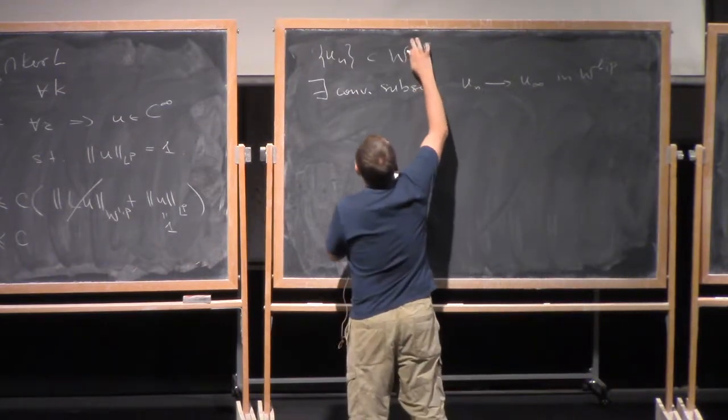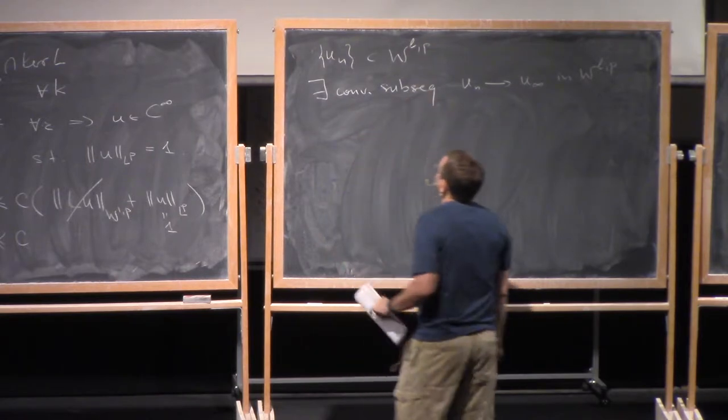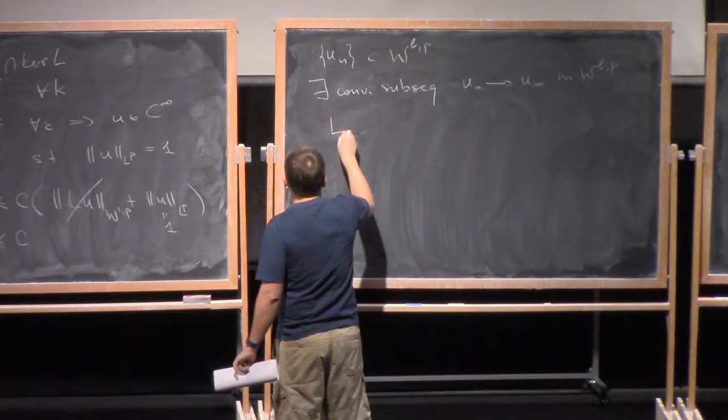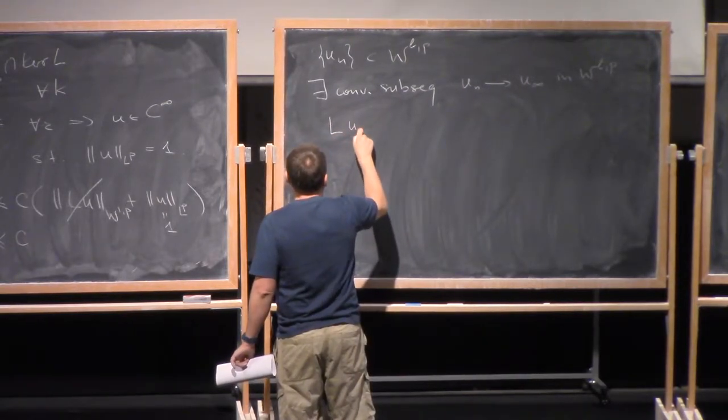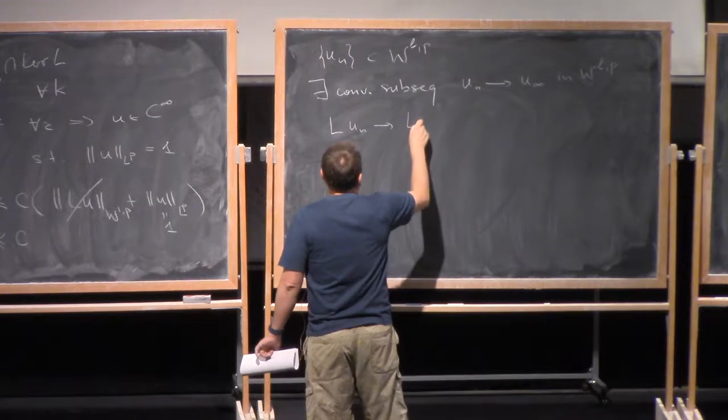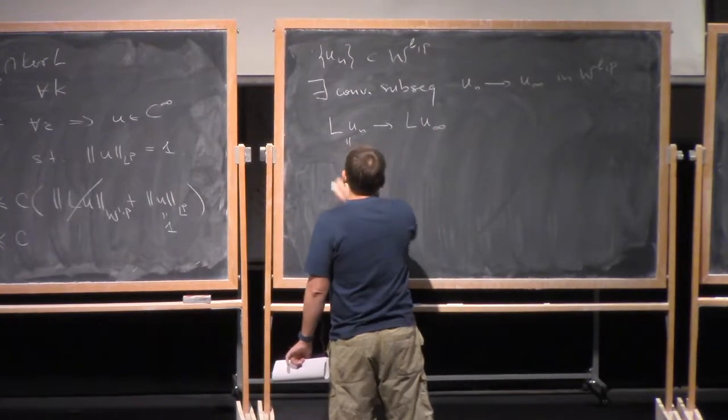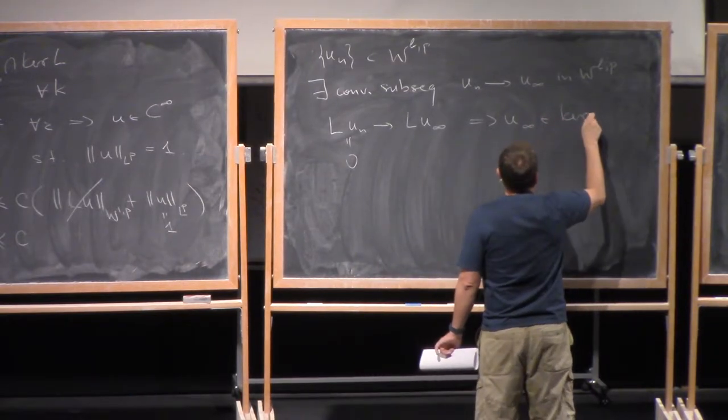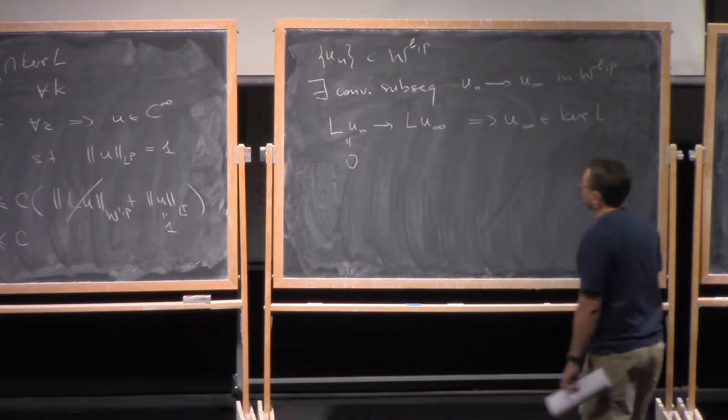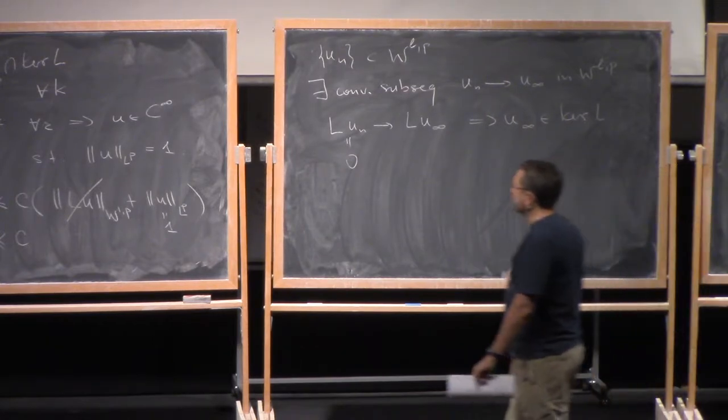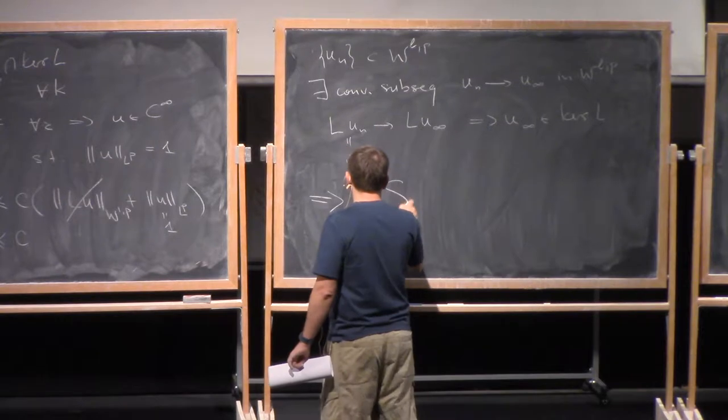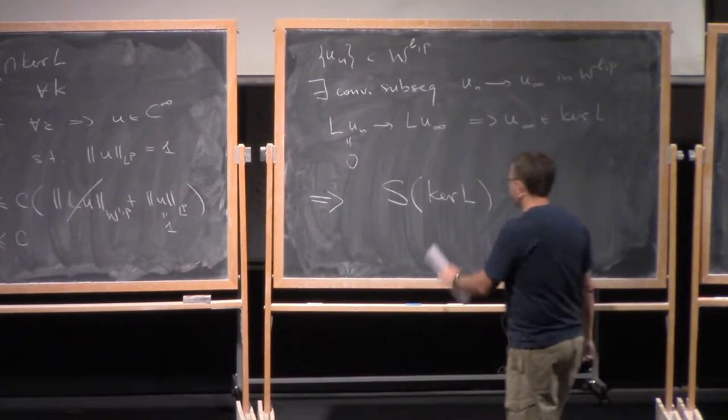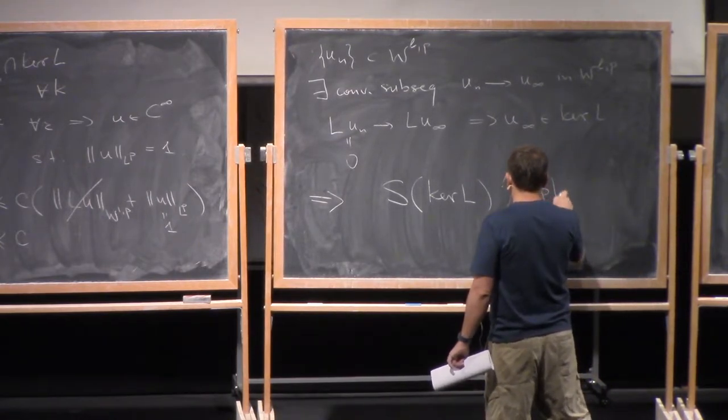So there, what I meant is L. Right, but our operator is a bounded one, so we can apply L to, so L un converges to L u infinity. This is 0, so u infinity is again in the kernel of L, which means that the sphere, the unit sphere, in this space curve L, is compact.